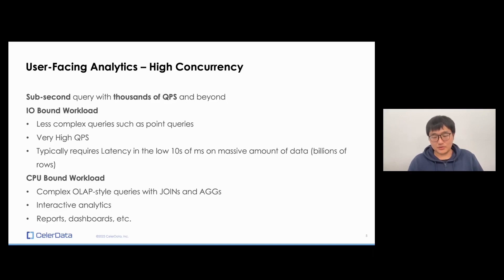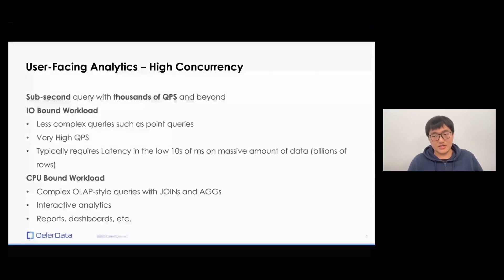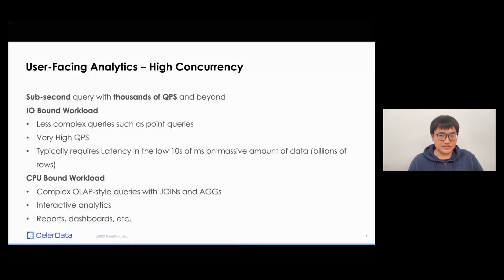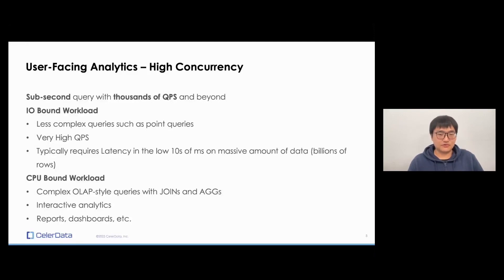First is your I/O bound workload. So these are bounded by either your disk, scanning a lot of data, or probably by network I/O, which often happens when your return set is huge. You return like 50 million rows of data, and that kind of causes some trouble. And these are all less complex queries, such as point queries. So these are like selects with a bunch of wares after it. And generally, the QPS is a bit higher. And typically requires latency in the low tens of milliseconds, like 50 milliseconds on a mass amount of data. I've seen some customers or some StarRocks users in the crypto space trying to pinpoint a few transactions and return them with very high QPS, a lot of billions of rows of data. So this is more of your I/O bound workload.